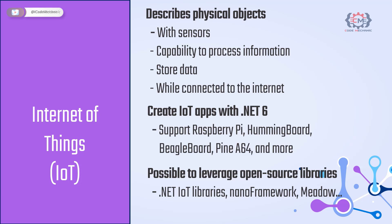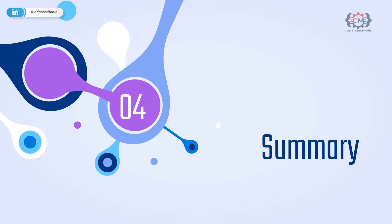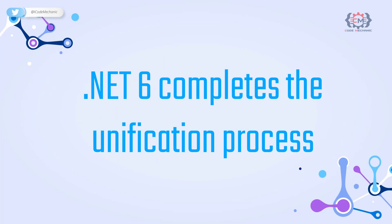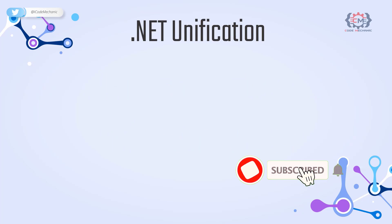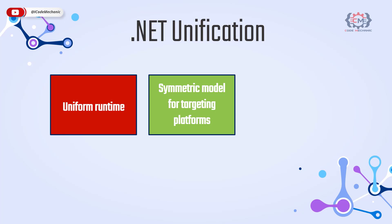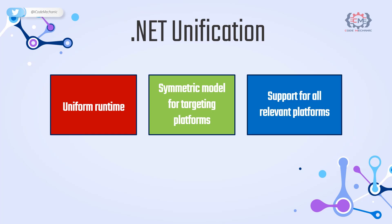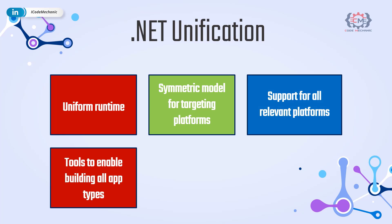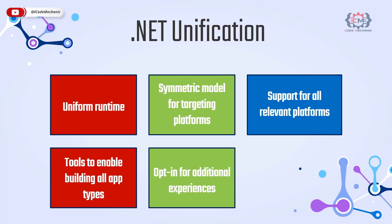Summary. Now that you have made it to the end, let me summarize the main takeaways of what is .NET 6. First and most important, .NET completes the unification process that Microsoft started a few years ago. Now you can create cross-platform applications with ease, sharing code and targeting multiple platforms using the same language and libraries. Unification means: a uniform runtime and library implementation, common APIs, a symmetric model for targeting operating systems, support for all relevant operating systems and environments, plus tools that enable building all application types.